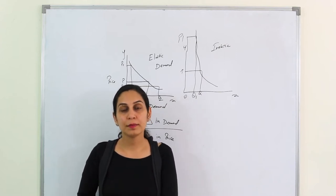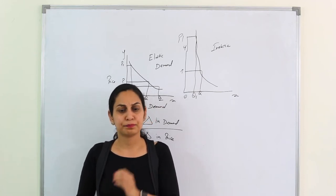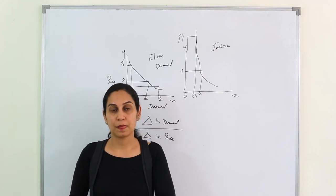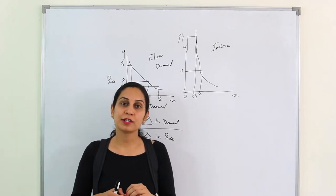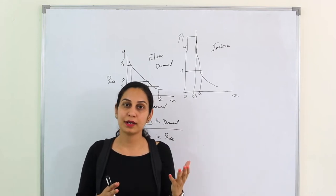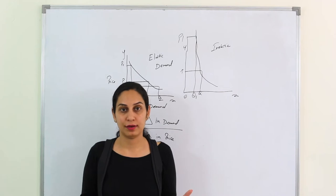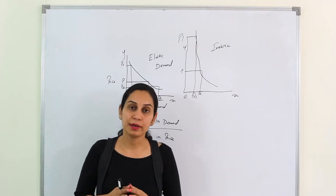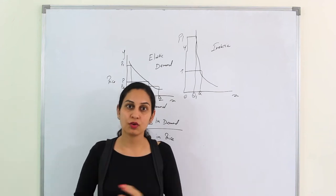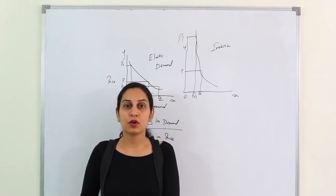Complementary goods are goods that are used together like bread and butter, pen and refill, printer and cartridge. Complementary goods vary in same proportion. If price of one increases, demand of other will fall. This is what we call complementary goods. I hope we have understood the basic concept of elasticity.